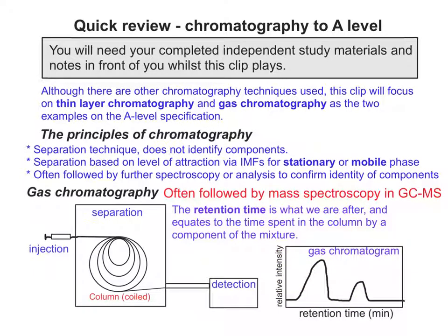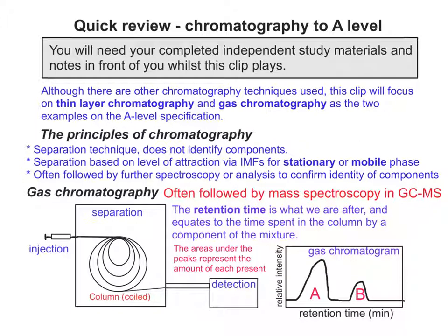The gas chromatogram we get is a plot of retention time on the x-axis against relative intensity on the y-axis. If we have component A and component B, the areas under the peaks represent the amount of each component present. We can deduce that A has a greater attraction for the mobile phase because its retention time is shorter, and B has a greater attraction for the stationary phase because its retention time is longer.